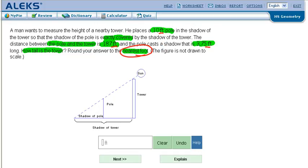Now the next thing we need to do is very carefully label. He places a 10-foot pole, so the pole is 10 feet tall. We're done with that number.